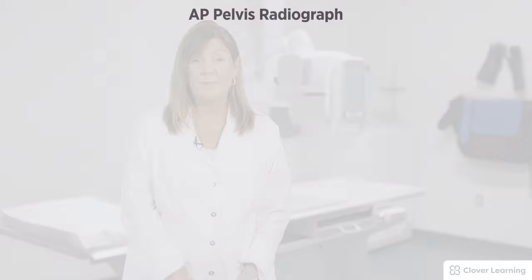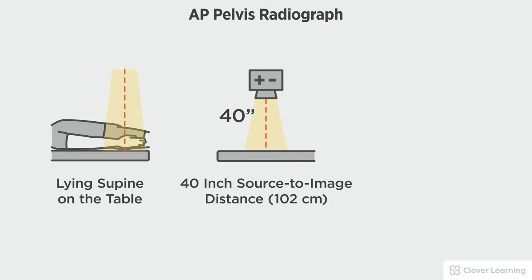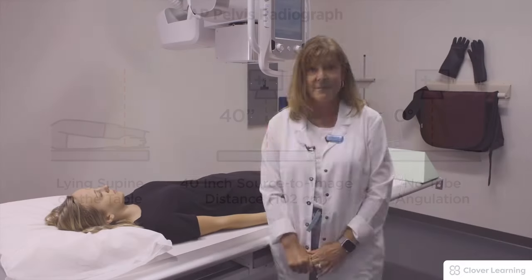In this video we will be demonstrating the AP pelvis. The AP pelvis should be performed with the patient lying supine on the table with a 40-inch source to image distance and no tube angulation.